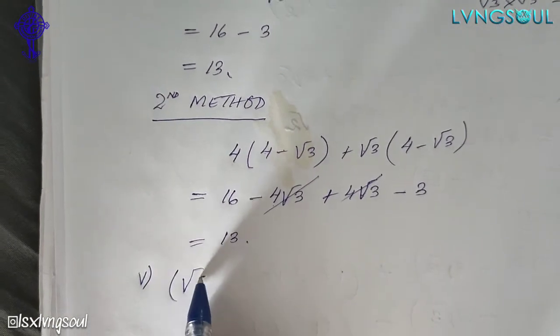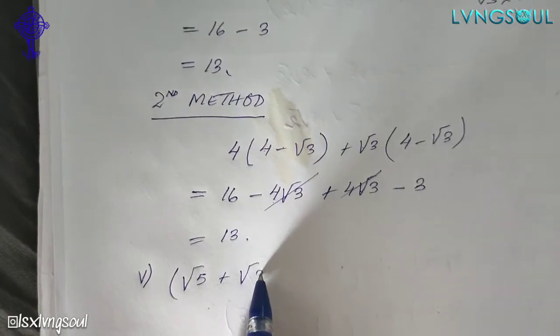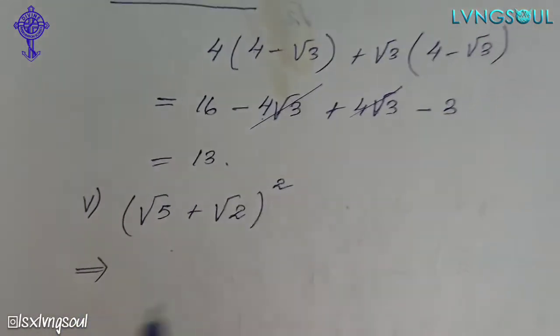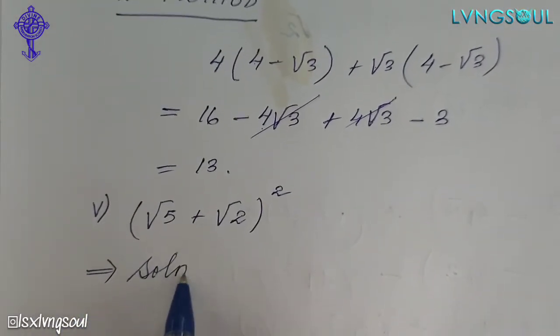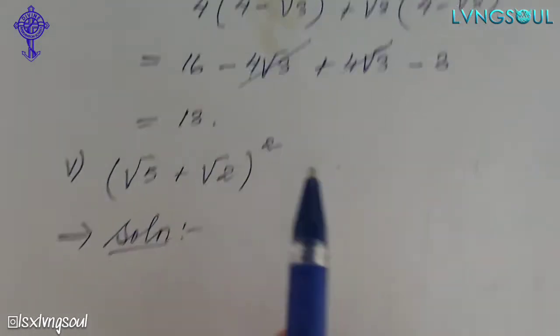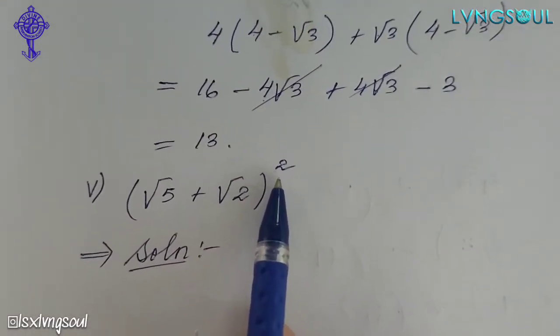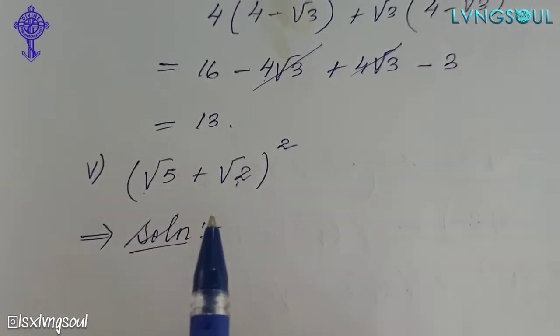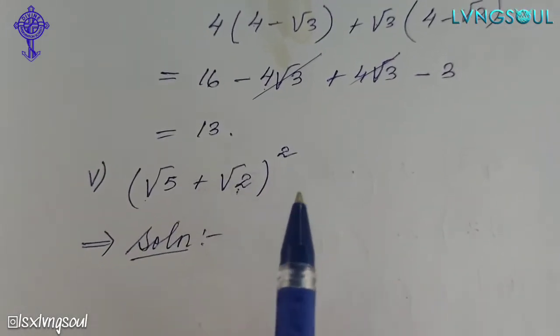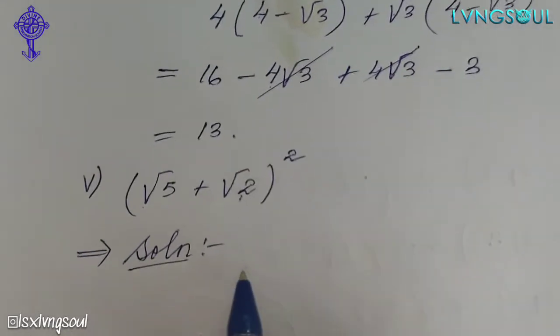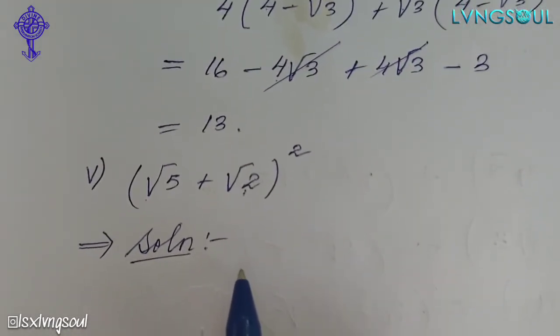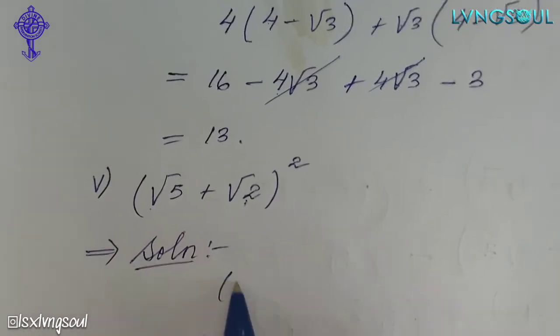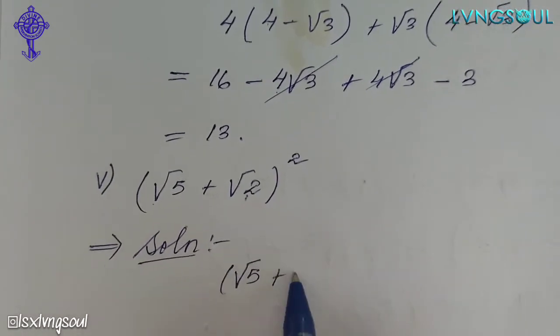Root 5 plus root 2 holding square. This is the method — the arithmetic method. The square is the 2nd power. This is the arithmetic method. This is the formula. And if you think that root 5 plus root 2 hold square.